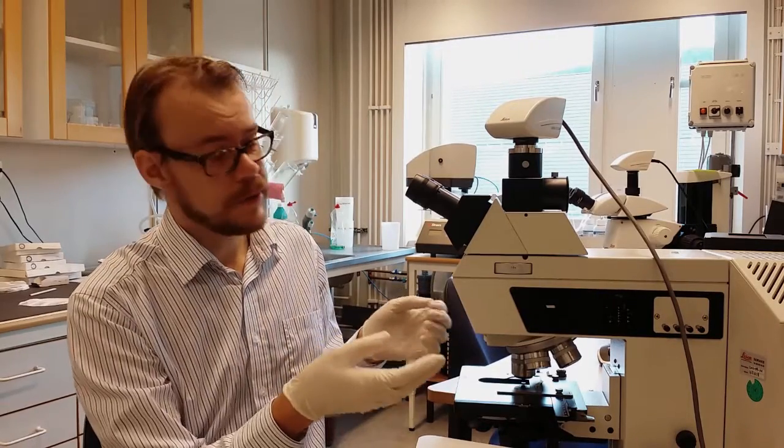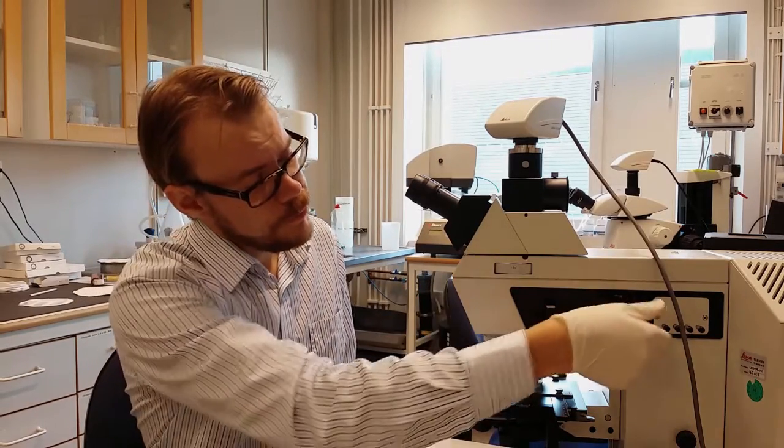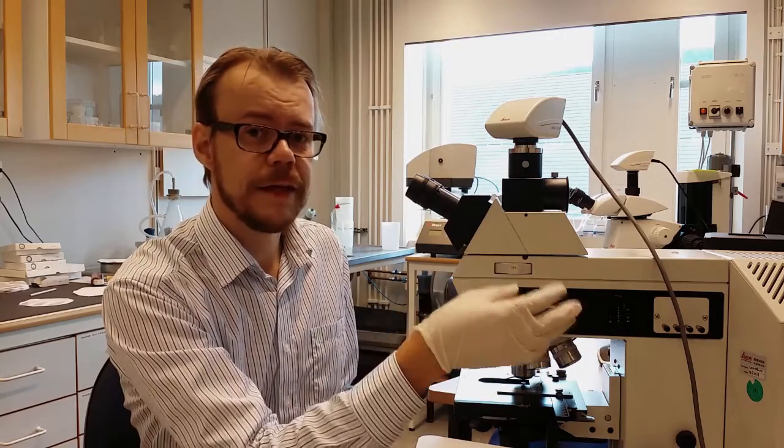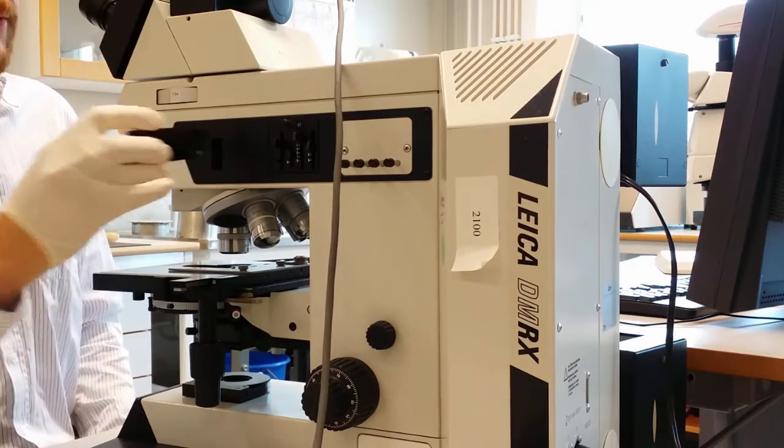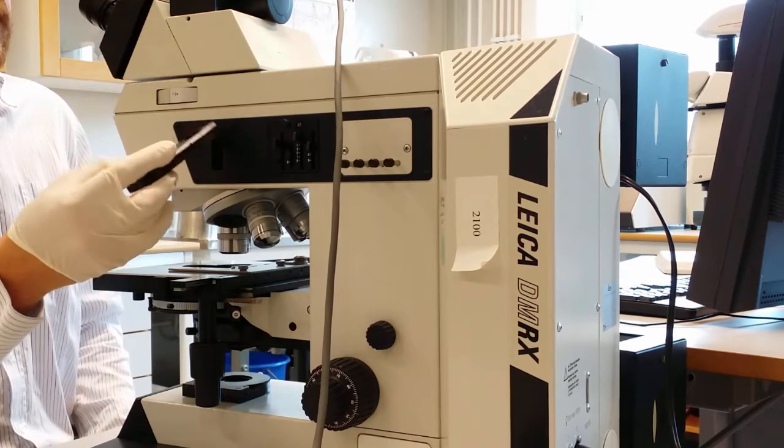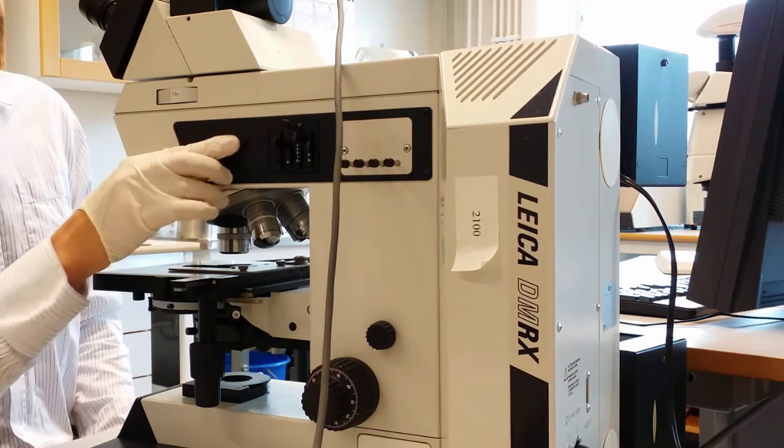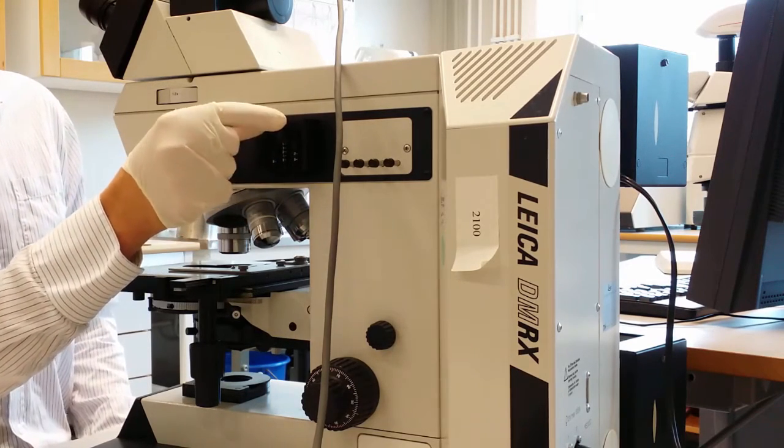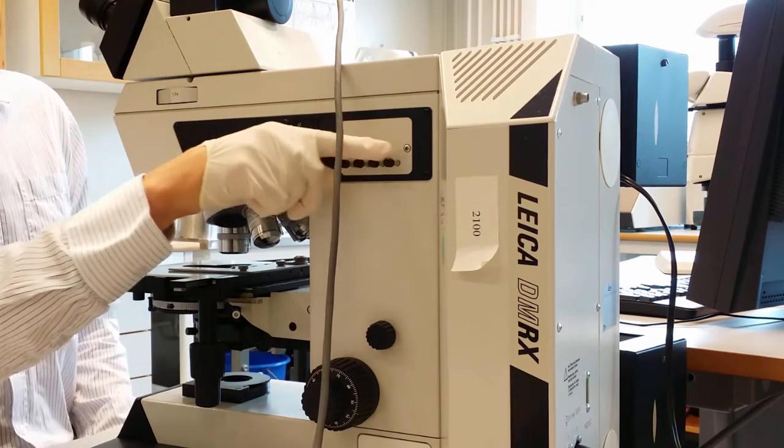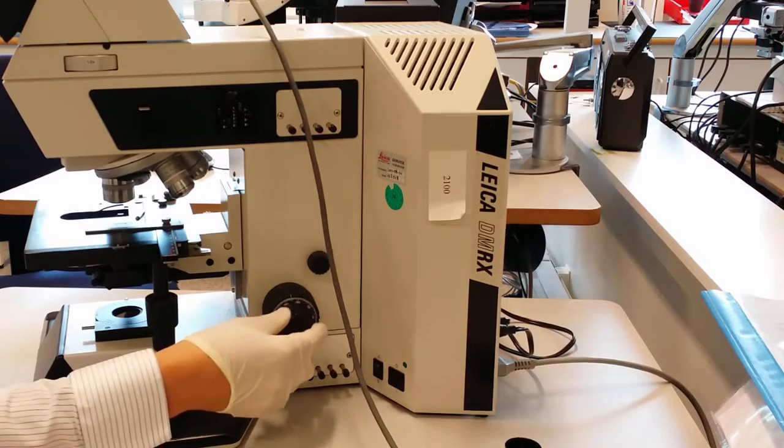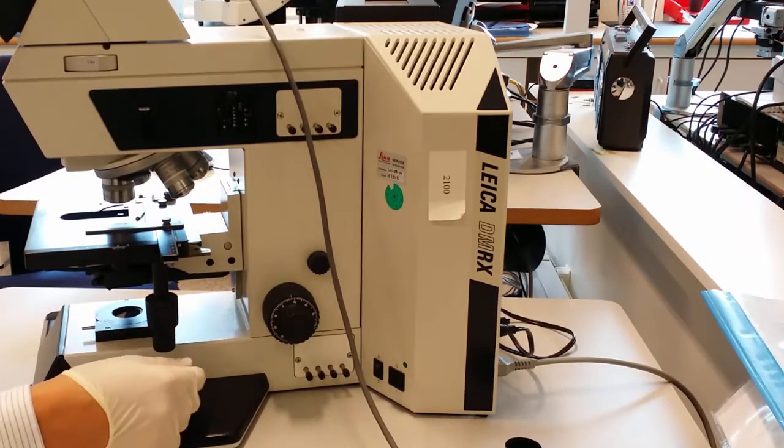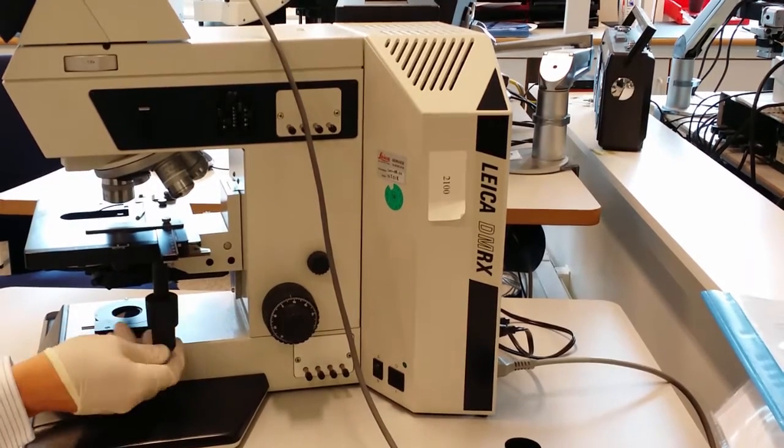So all things you see here on the microscope. These ones at the top for example, those are the reflective light option. This piece you choose the differential interference contrast option with. This piece is for the dark field imaging. And here you have some color filters. On the bottom here you have the focusing knob. You raise the table up and down. The XY translation stage.